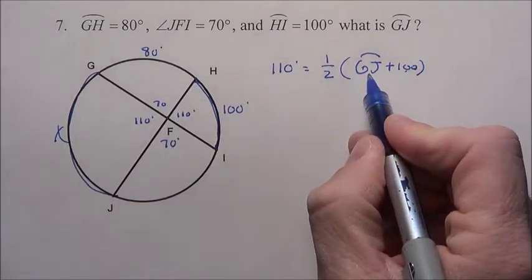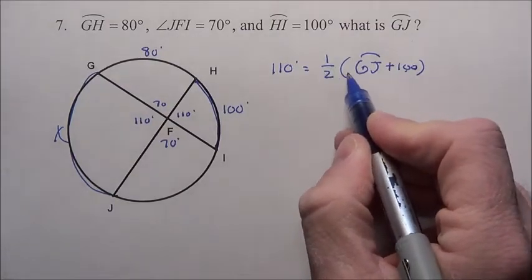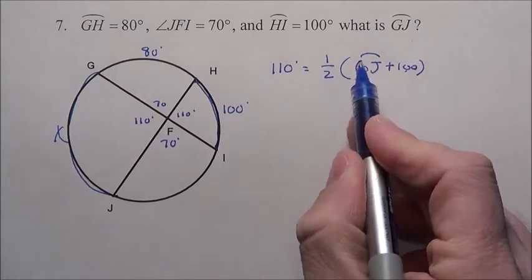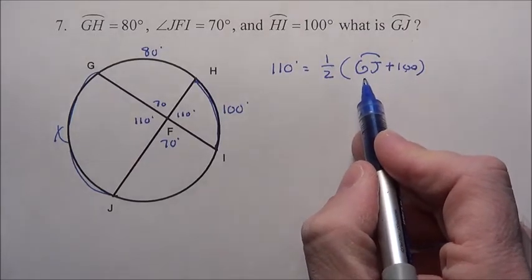we can call it X, but I just call it JG, and then we multiplied by a half, and it gave us 110. So how are we going to solve this? There's one variable, just arc JG, that we have to solve for.